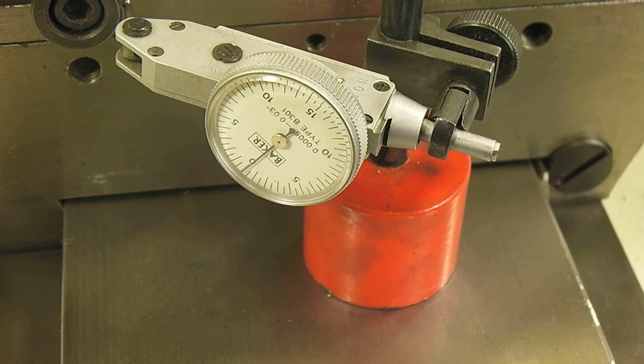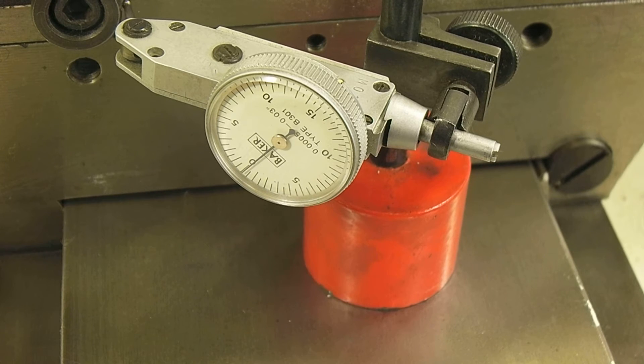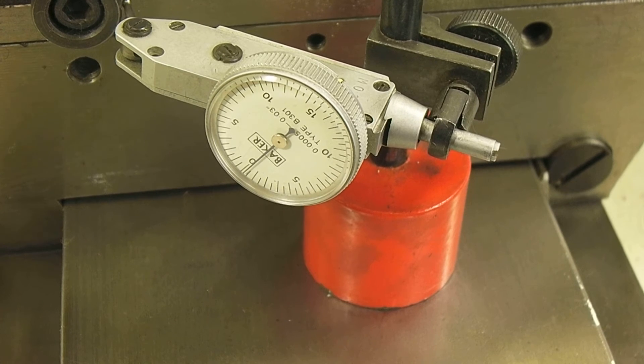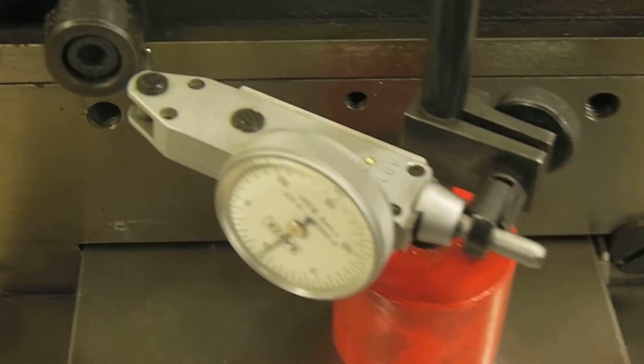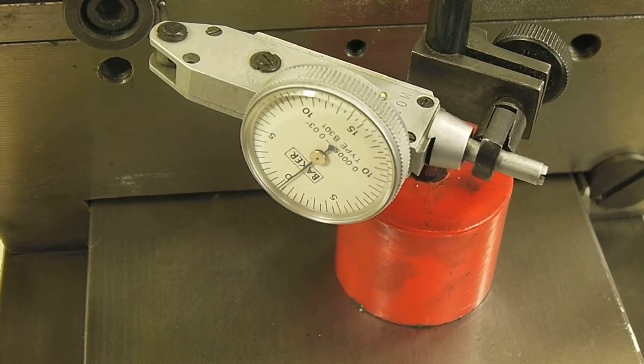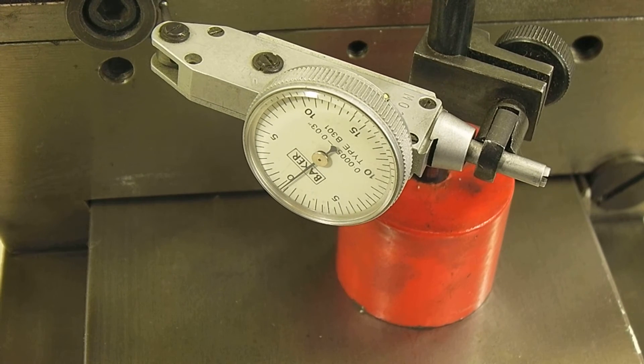Now we're going to zero the DRO on the X-axis. And then we're going to back up until, let's see, it moved first time. So right now we have 0.4 thou. We keep backing up.